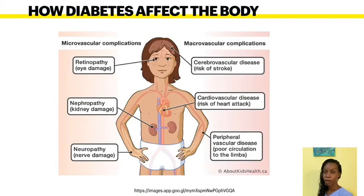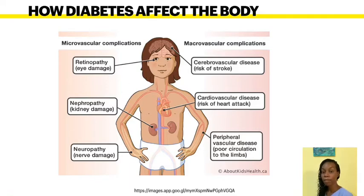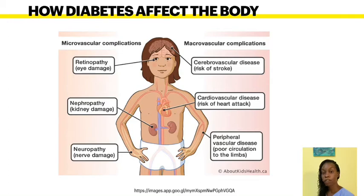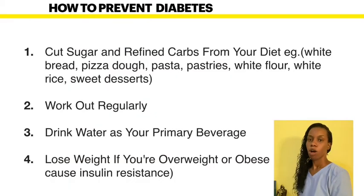How does diabetes affect the body? There are microvascular and macrovascular complications. Microvascular complications include retinopathy — damage to the eye — nephropathy — damage to the kidney, which can lead to chronic kidney disease — and neuropathy — damage to the nerves. Macrovascular complications include cerebrovascular disease that can lead to stroke, cardiovascular disease that can lead to heart attack, and peripheral disease, which is decreased circulation in the limbs.